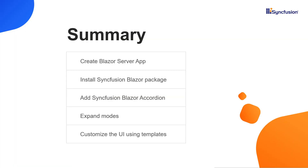Finally, let me summarize the main points. I have explained the steps to create a Blazor application and add the Syncfusion Blazor package. Then I showed you how to add the Syncfusion Blazor accordion component to the Blazor server application. Finally, I explained how to add prominent features like expand modes and customizing the accordion UI using templates. You can download this working example from the GitHub link in the video description below. You can also see about getting a free license key to use our Blazor products if you are eligible for our community license.